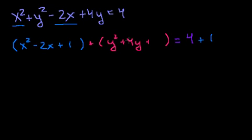And here, we take half of 4. Half of 4 is 2, 2 squared is 4. Put a 4 here. So you have to add a 4 to the right-hand side as well. And we actually did add just a 4, because there's nothing multiplying the 4 out here.